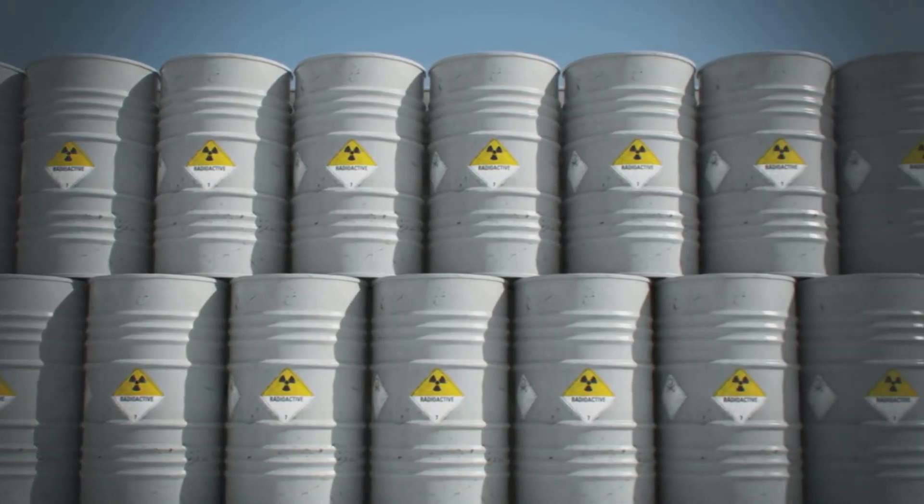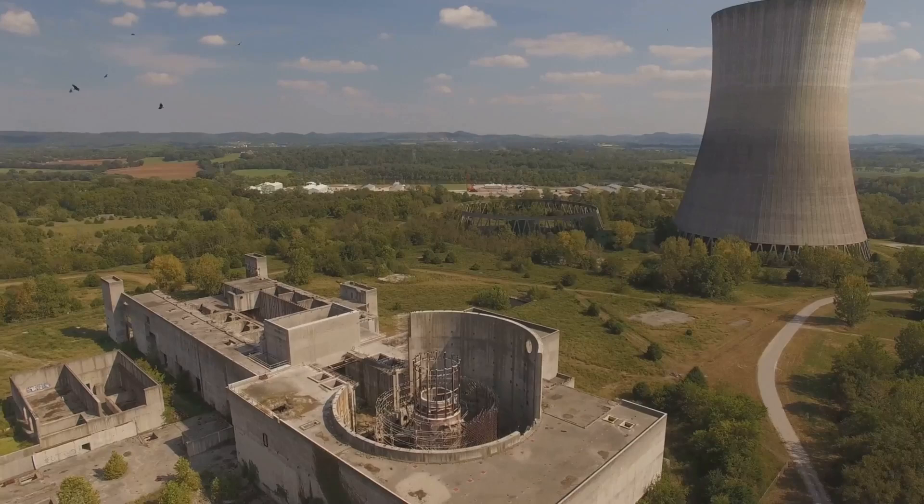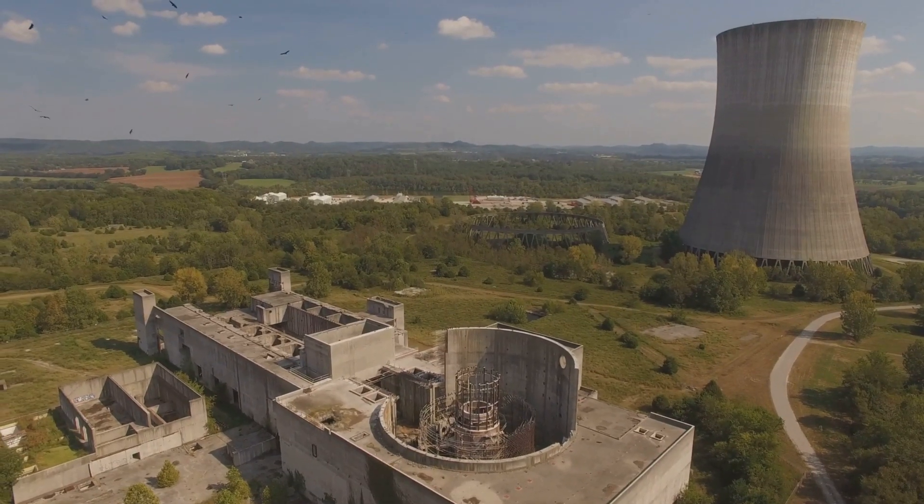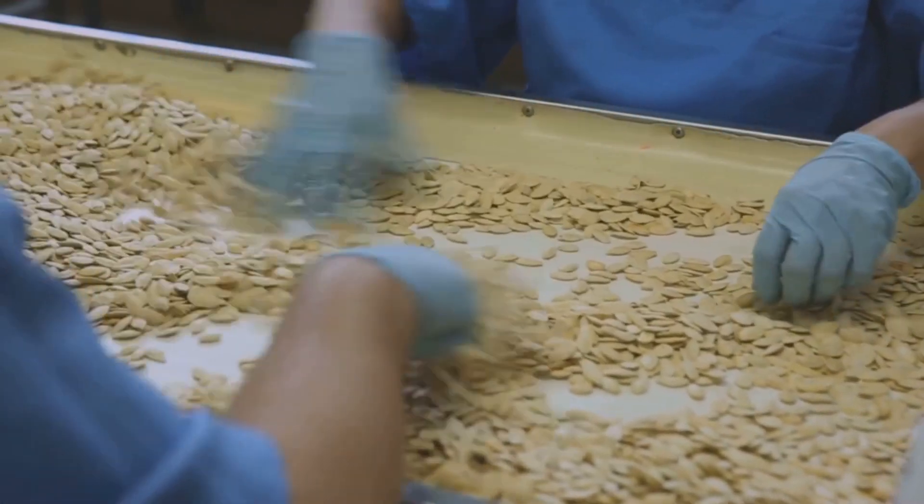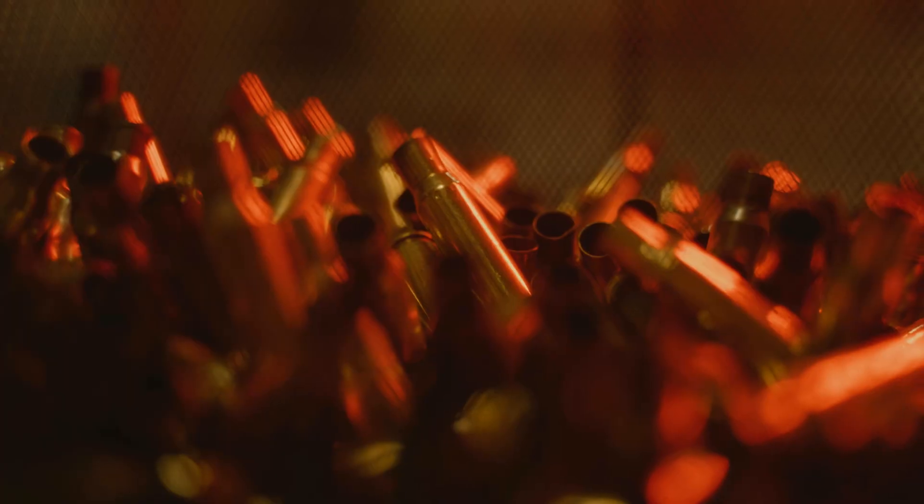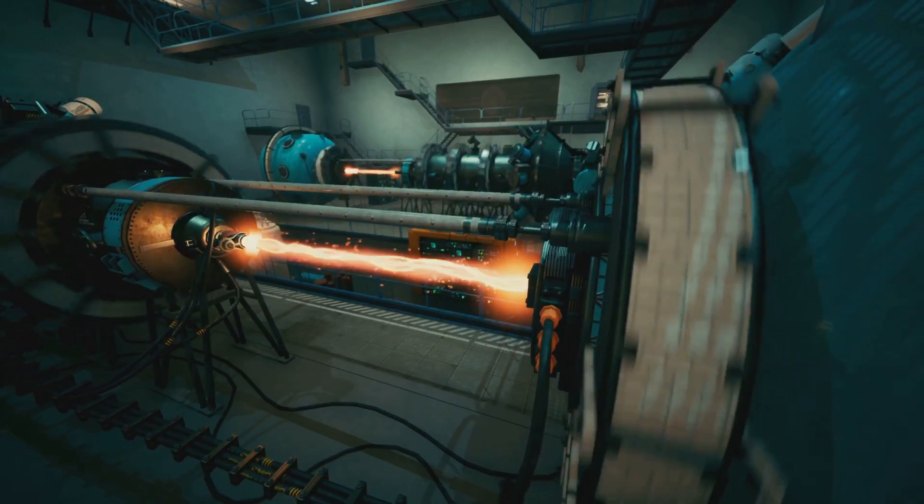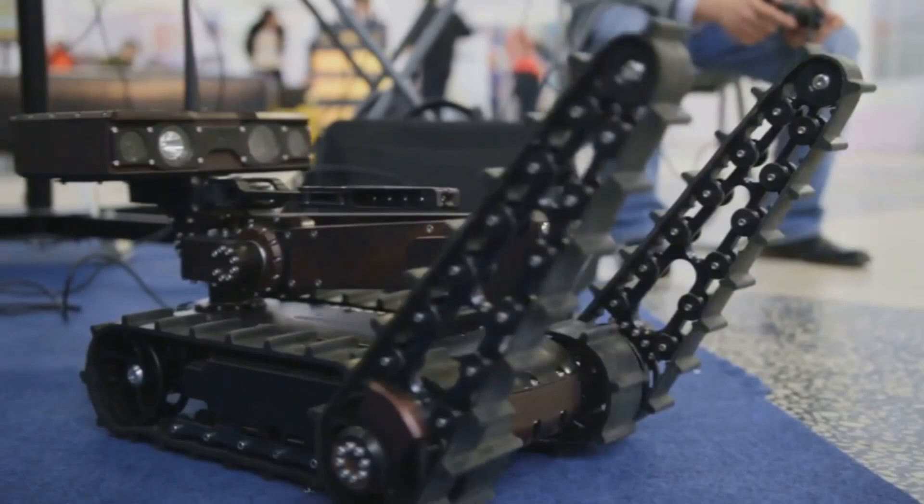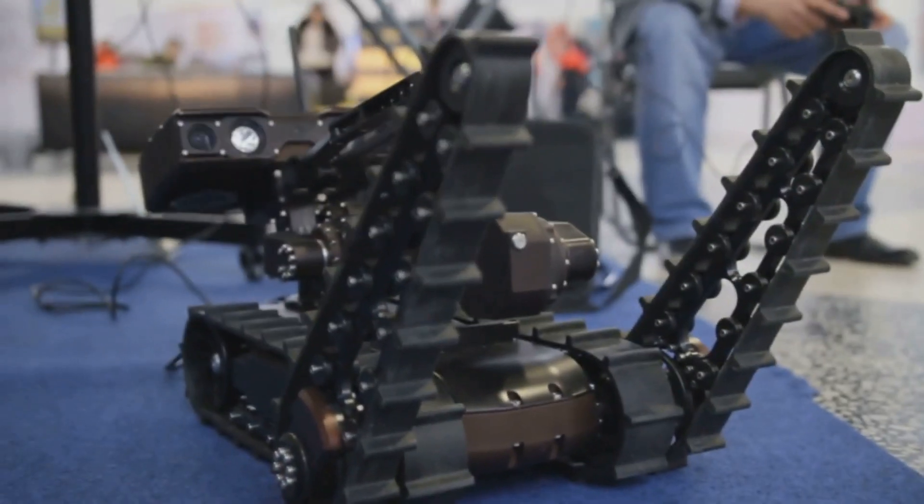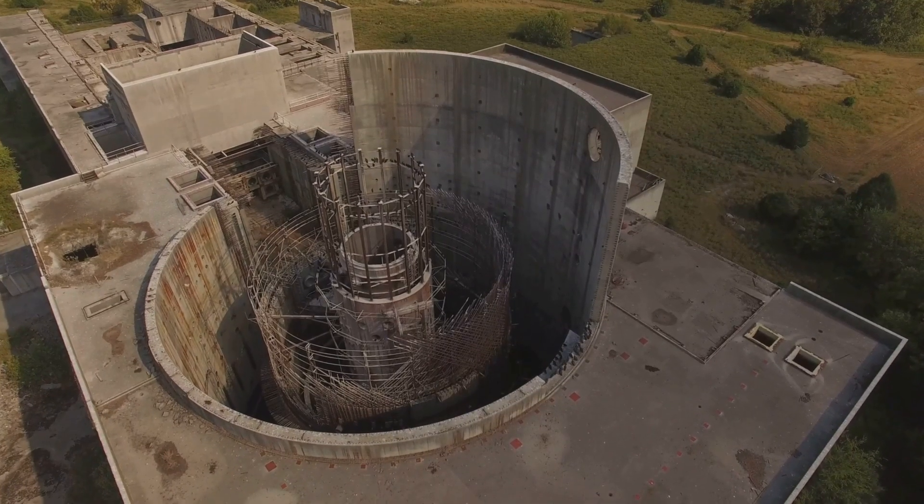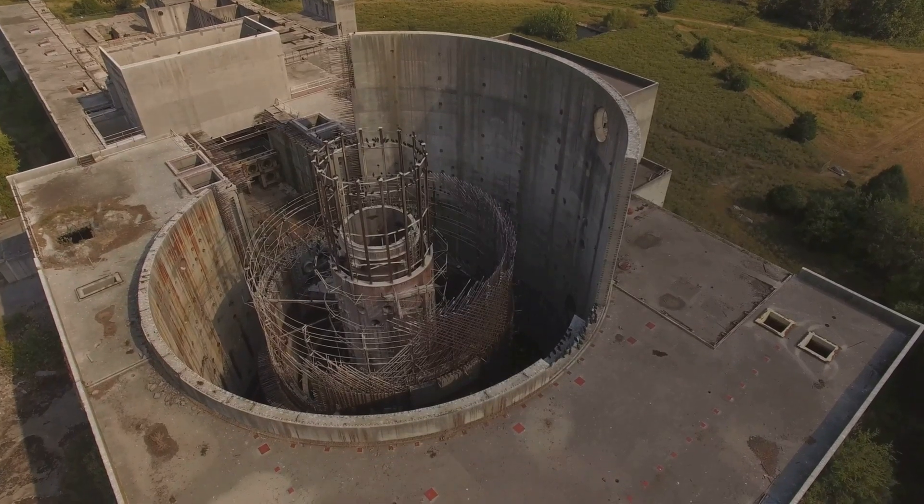Separating the valuable plutonium from this highly radioactive soup is a process known as nuclear reprocessing. It's a bit like trying to find a specific needle in a haystack full of other, slightly different needles, all while the haystack is glowing hot. This process is done with extreme care using remote-controlled machinery behind thick, protective walls to keep workers safe from the intense radiation.